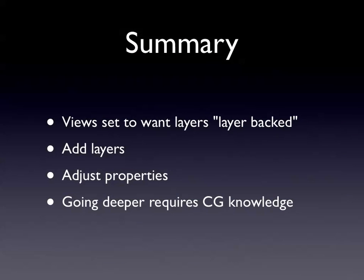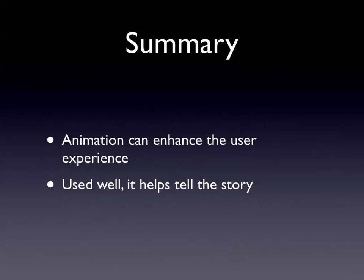So really, what we do is take a view and tell it to set wantsLayers to YES, so it participates in the layer hierarchy. We construct a whole pile of layers and add those as sublayers to the top-level layer. Then we adjust the properties — things happen. You need to understand CG a little more if you want to customise, but at the very least you can play around with points and rectangles. These things can enhance the user experience — a subtle animation can communicate what the user should do or how the information has changed. We do it because it helps tell the story. Thank you very much.